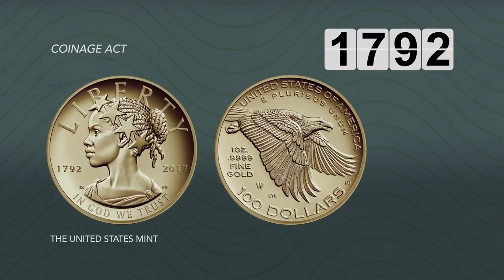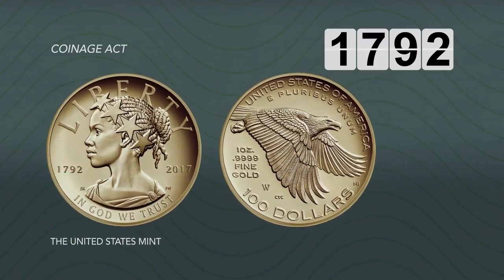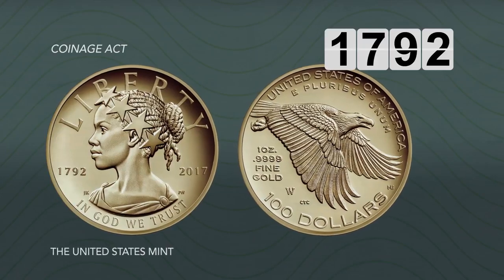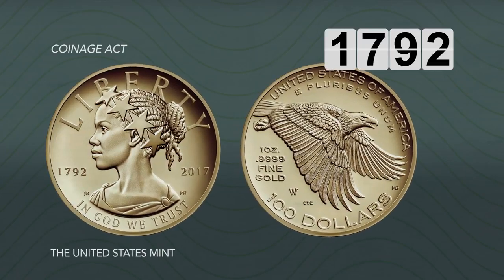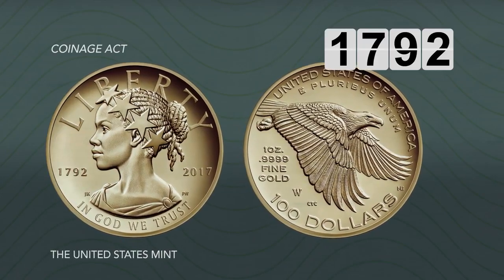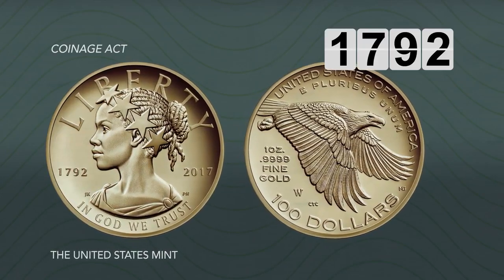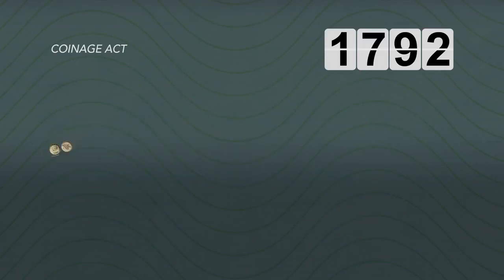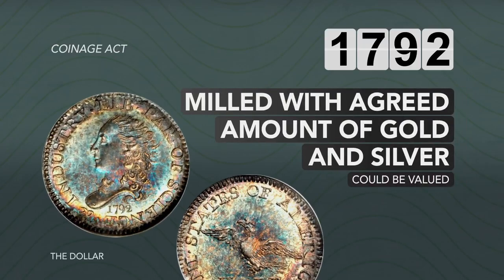The United States Mint, which also has its roots in the Coinage Act, was created to produce and circulate the U.S. dollar across the Union and convert any other recognized currency into the new unit of account. The dollar was milled with an agreed amount of gold and silver, which gave the currency a standard by which it could be valued.